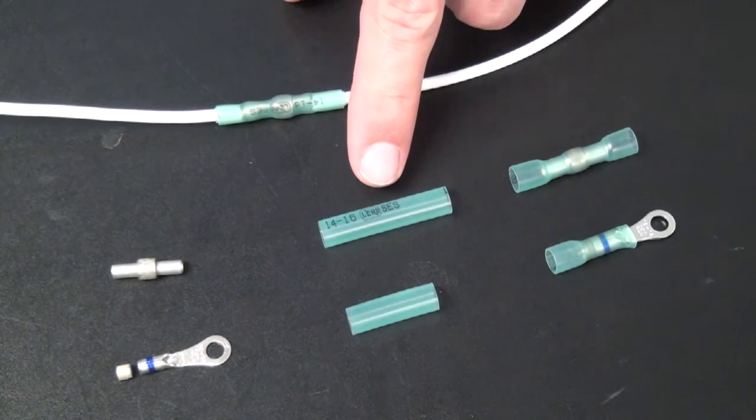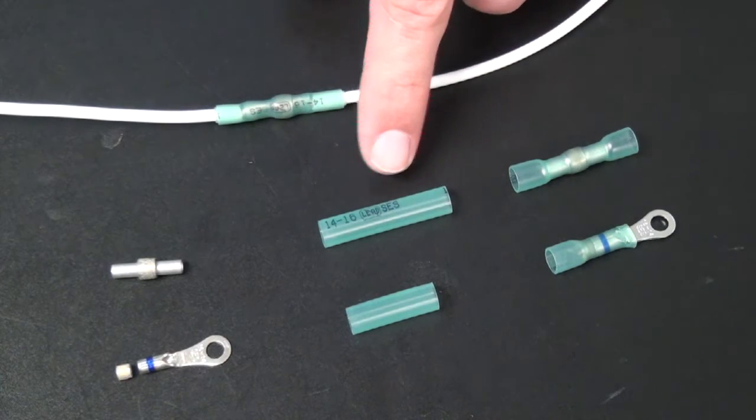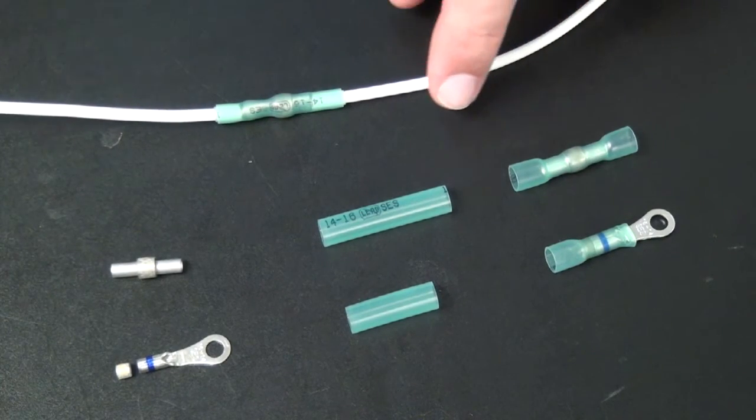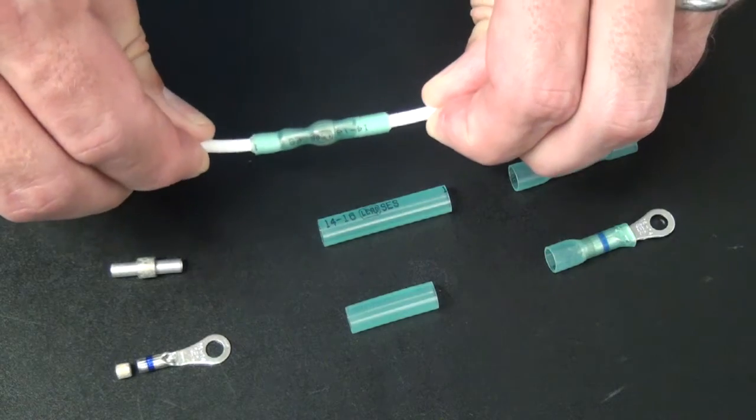These components are insulated with adhesive-lined, dual-wall, heat-shrink tubing to prevent wire corrosion. When properly installed, these connectors are as strong as the wire.